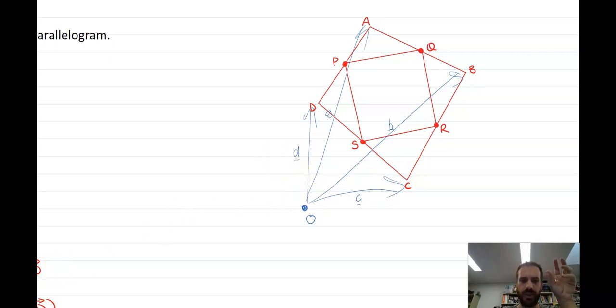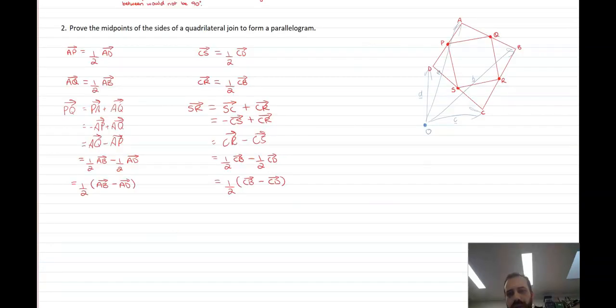When we look at vector AB, we can now describe that using our position vectors as vector B minus vector A. So I've got equals one half, and AB becomes vector B minus vector A. And similarly, vector AD becomes vector D minus vector A. And then what can I do here? I've got a B, I've got a minus, minus, minus A, which is minus A plus A. The A's are going to cancel each other out. And I've got half vector B minus vector D.